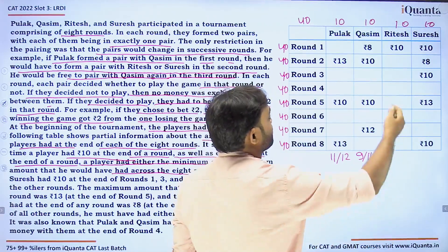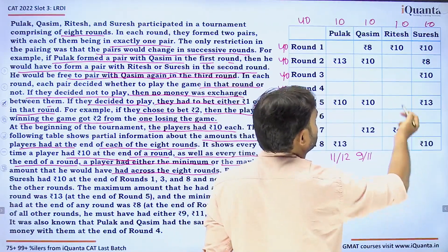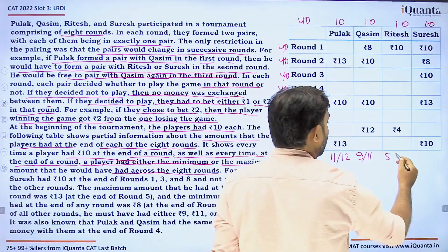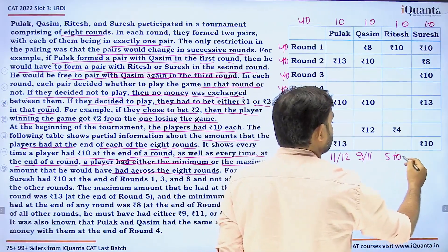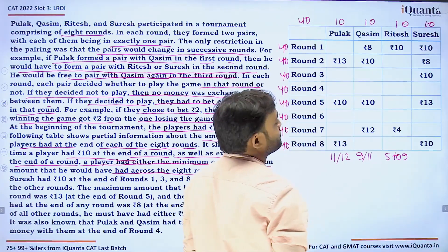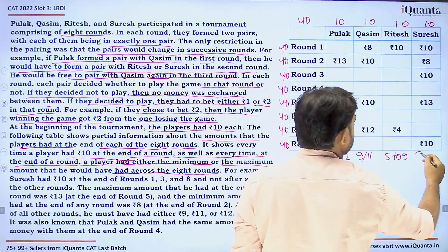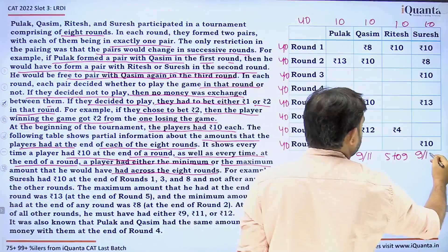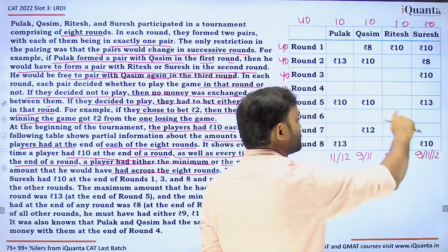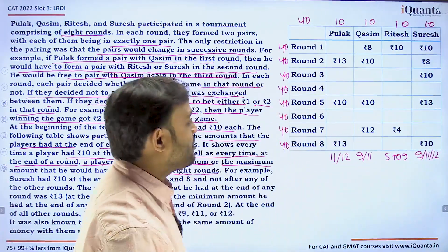For Ritesh, the minimum amount is 4 and the maximum is 10, so any unfilled cell for Ritesh could be any number from 5 to 9. For Suresh, the minimum is 8 and the maximum is 13, so the remaining boxes for Suresh could be 9, 11, or 12.